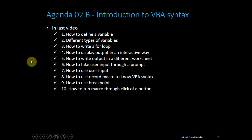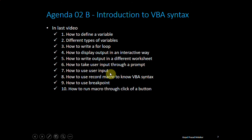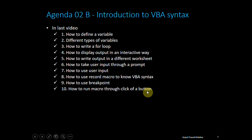In the last presentation, I showed you how to define a variable, what are different types of variables, how to write a for loop, how to display output in an interactive way, how to write output in a different worksheet, how to take user input through a prompt using input box, how to use the record macro feature to know VBA syntax, how to use breakpoints to discover what the code is doing, and how to run a macro through the click of a button.